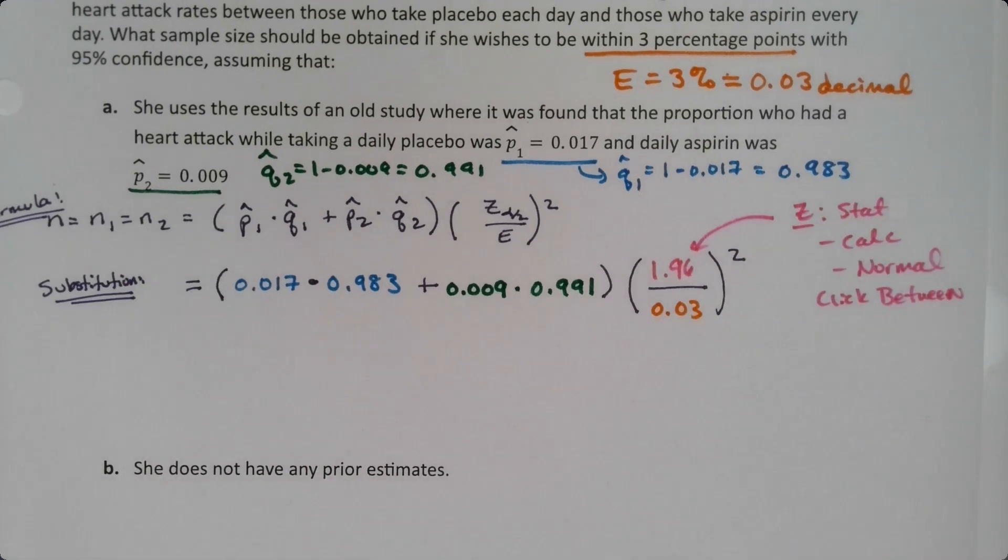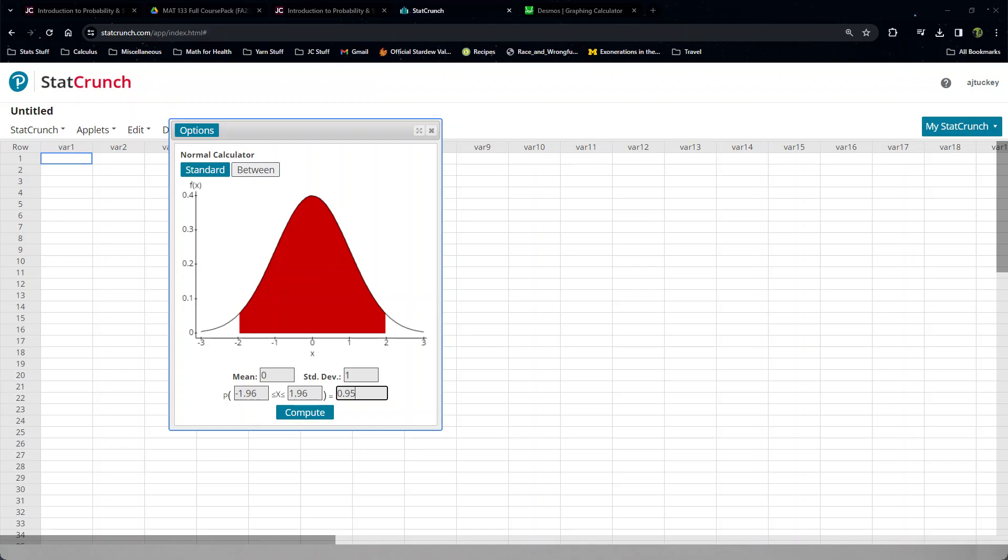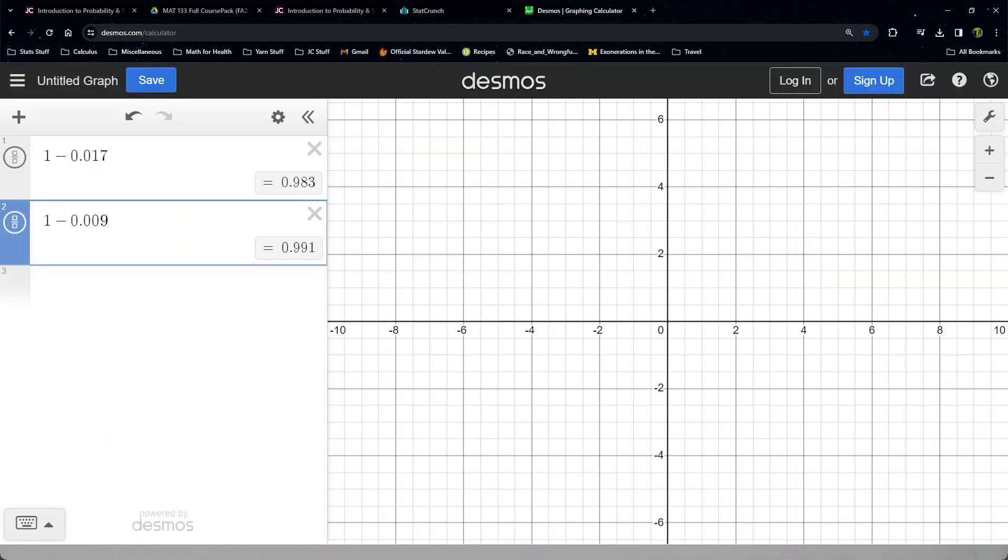Alright, so now we have to go type all this in. So I will tell you that a lot of times it's easier for students to do it in two pieces. To do the left-hand piece, which is the parentheses. So they do 0.017 times 0.983 plus 0.009 times 0.991. So they just get what that number is, and they write it down. So I'll do the same.